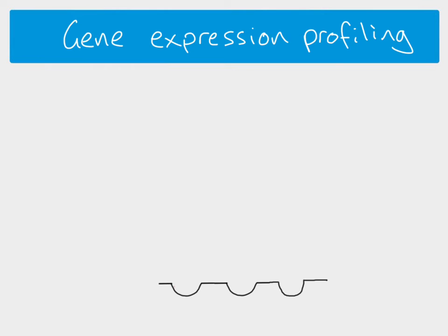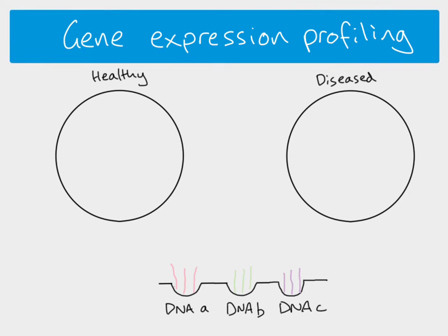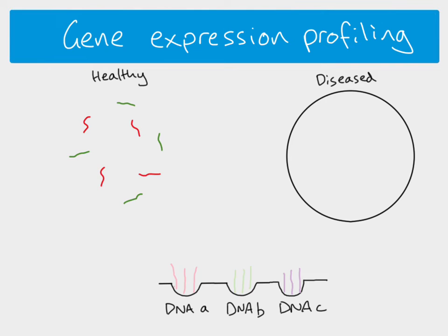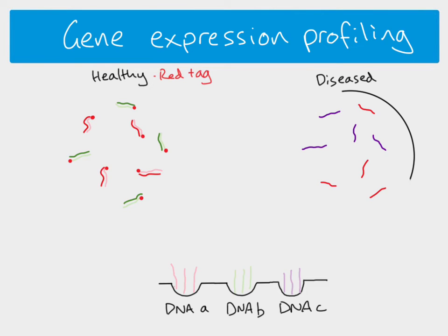For comparisons of gene expression between a healthy and a diseased cell: from the healthy cell, we extract messenger RNA, use reverse transcriptase to get complementary DNA, and label it with a red tag. From the diseased cell, we again extract messenger RNA, use reverse transcriptase, and this time use a green tag — a different colour for each cell type.